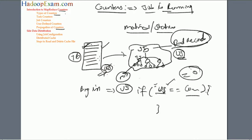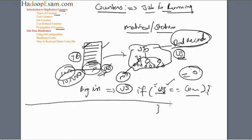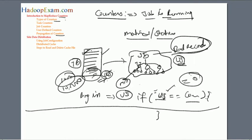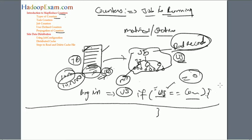Another use case: if any file is corrupted, you can identify it. If you're expecting 10 million records in the output but only 10 thousand records are coming out, you can determine that some records were corrupted and not being processed. This kind of issue can be identified using counters.